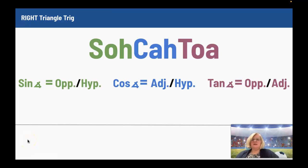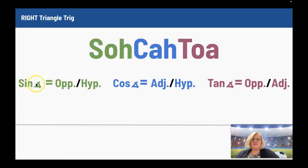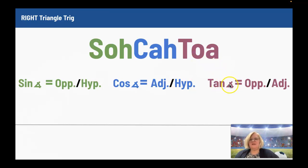This last section is on basic trigonometry. It's used to find the sides or an angle in a right triangle, and you can only use this on right triangles. The acronym is SOHCAHTOA. SOH stands for sine of an angle equals the opposite side divided by the hypotenuse. CAH stands for cosine of an angle equals the adjacent side divided by the hypotenuse. And TOA is tangent of an angle equals the opposite side divided by the adjacent side.